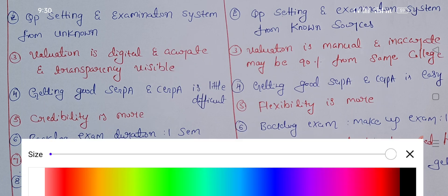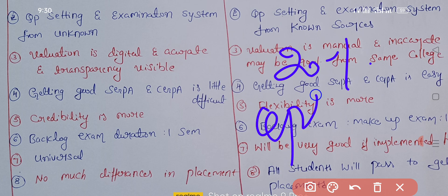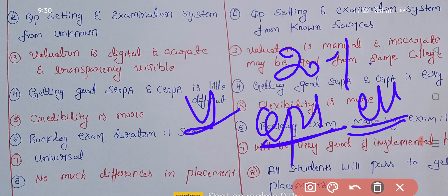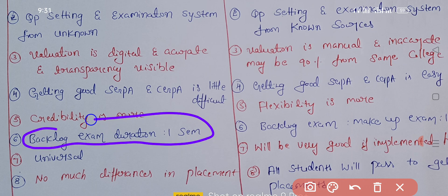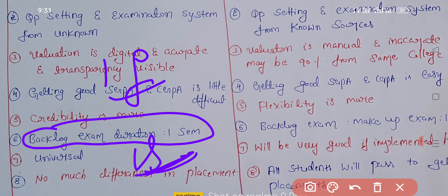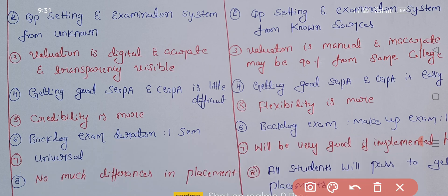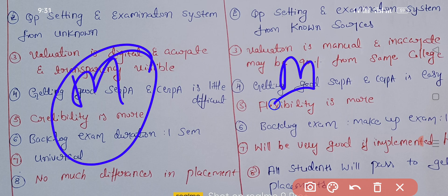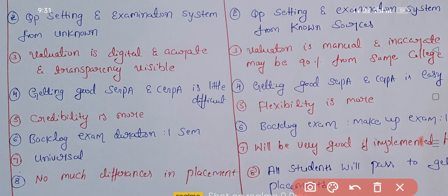Credibility is more in VTU, while autonomous colleges have a more flexible system. In autonomous colleges, you can change 20% of the syllabus, set your own question papers, conduct your own valuation, and design your own examination system. Regarding backlogs, in VTU if you fail a subject you must wait an entire semester to reappear, but in autonomous colleges there is a make-up exam within about one month, giving more flexibility.